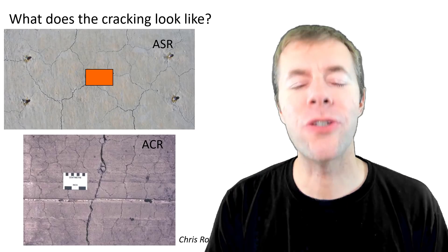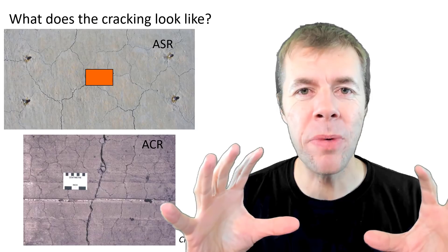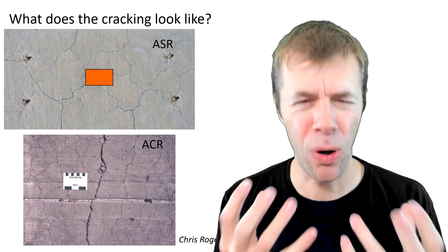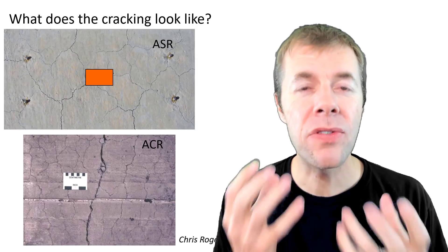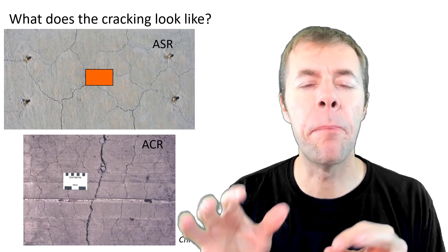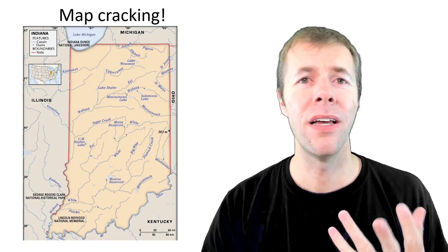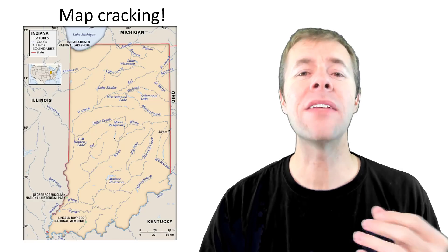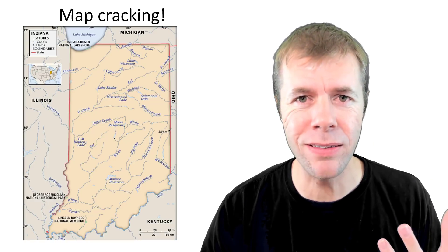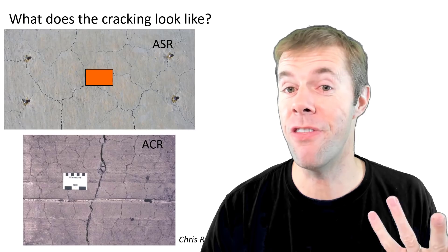What do the cracks look like? They're randomly distributed on the surface. Some people call this map cracking, because to their eye it looks like a bunch of rivers on a map — like this. See all these rivers randomly going all these different places? Doesn't it remind you of this?